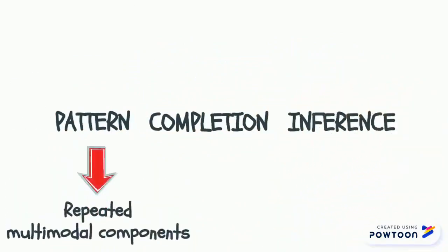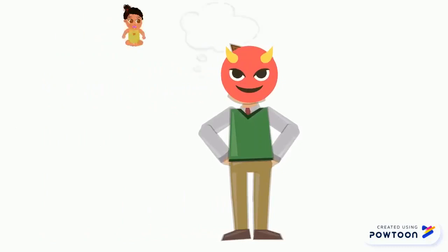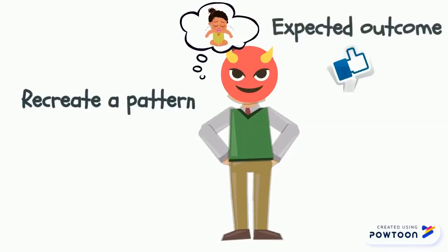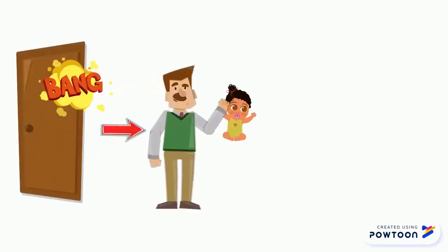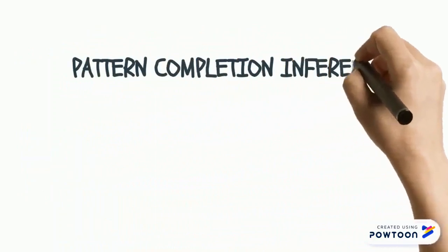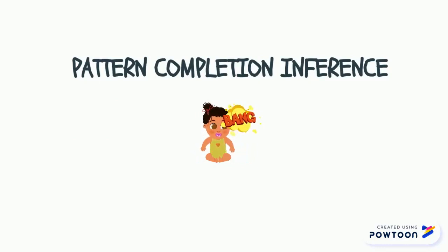Barsalou coined the concept of pattern completion inference, a mechanism through which we are able to make predictions. Consider a father playing a trick on his daughter: he recreates a button that relies on the child's previous experience to reach an unexpected outcome. The child hears the sound of something banging against the door, and the father automatically comforts the child. The pattern completion inference process is so strong that the child's prediction — the crying — becomes an automatic response, even though the tangible pain didn't actually happen. The child inferred the crying as a result of the bump on the head and the comforting attitude of the father.